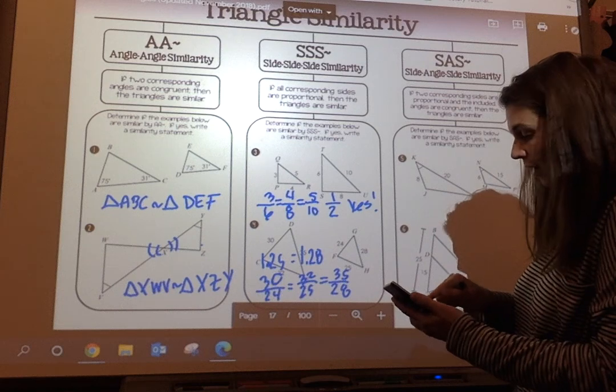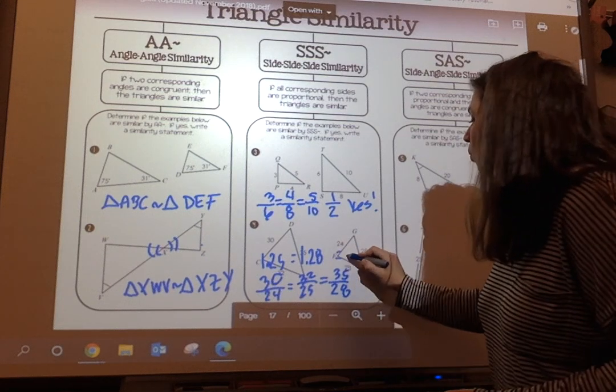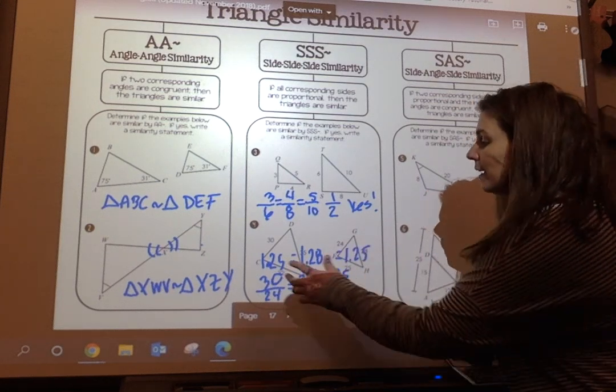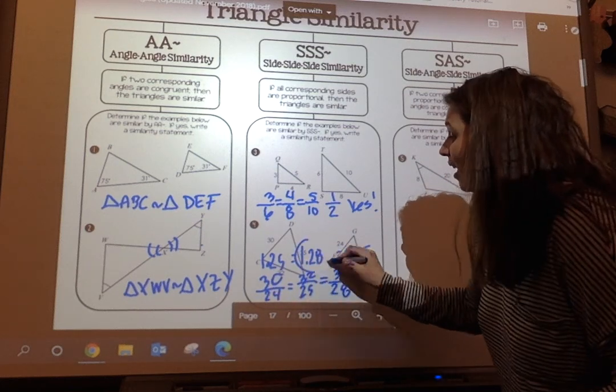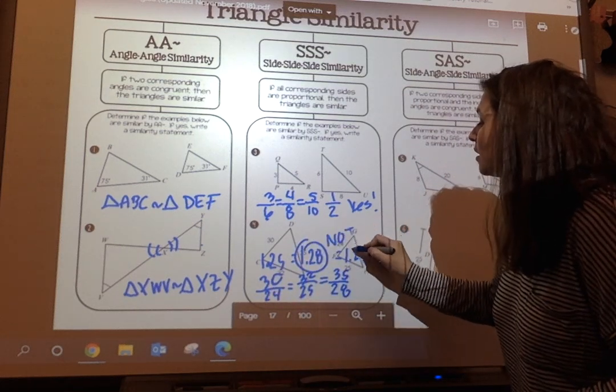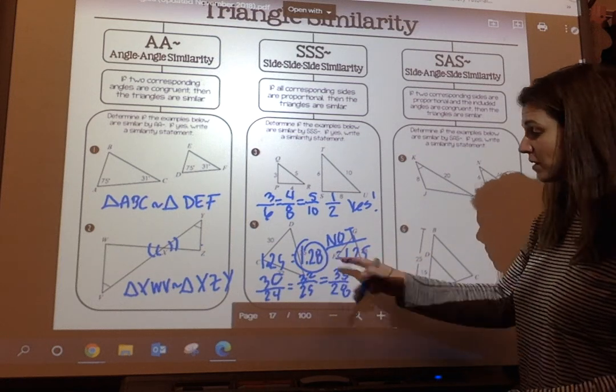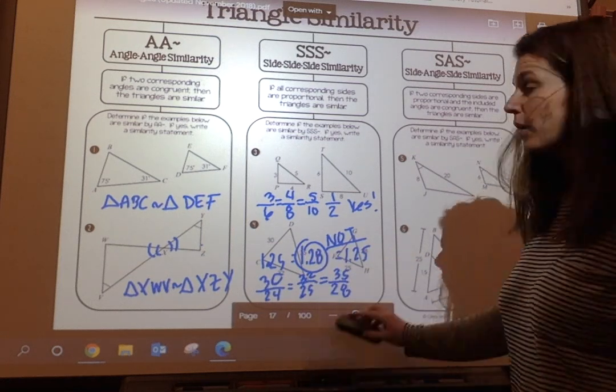And 35 divided by 28, and I get 1.25. These are the same, but this is not. So these are not—they are not similar because not all sides are proportional.